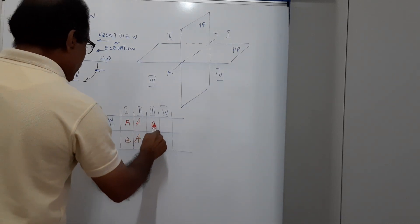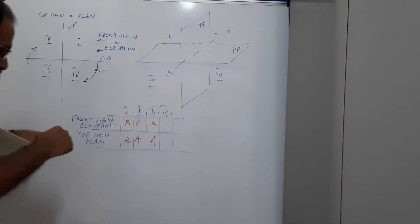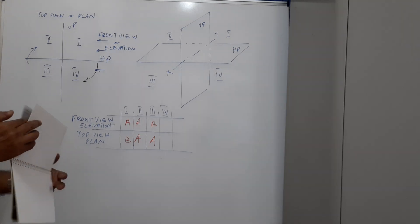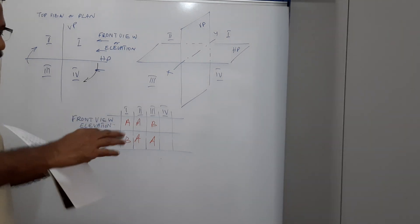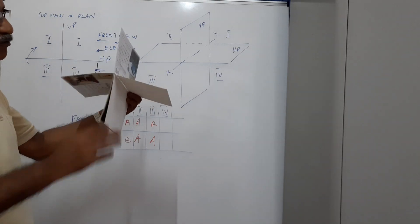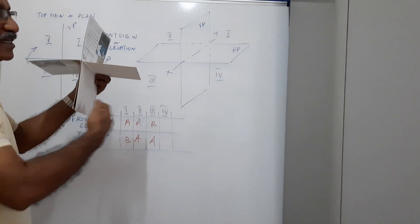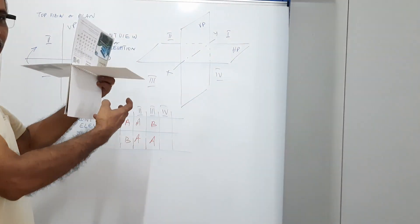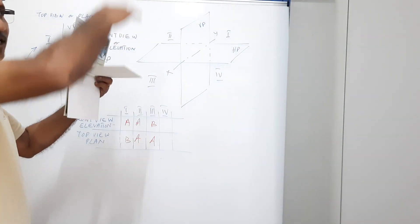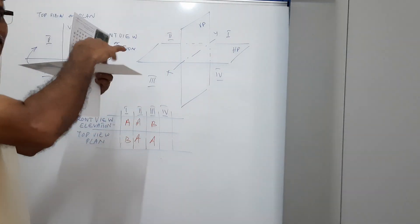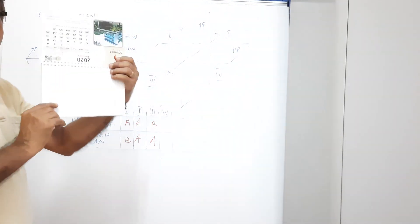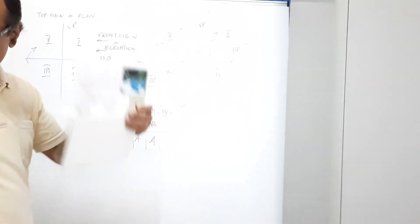To summarize the third quadrant: elevation is below the XY line, plan is above the XY line. Fourth quadrant: the object is here, you look from the front for the elevation, look from the top for the plan. The VP is transparent so through the transparent plane you see the object. Result: both the elevation and the plan are below the XY line.